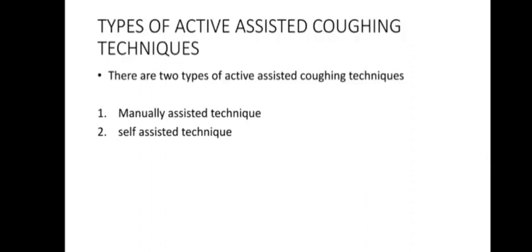Manual assisted directed cough with pressure to the thoracic cage may be contraindicated in the presence of osteoporosis or flail chest. Untreated pneumothorax is also a contraindication.